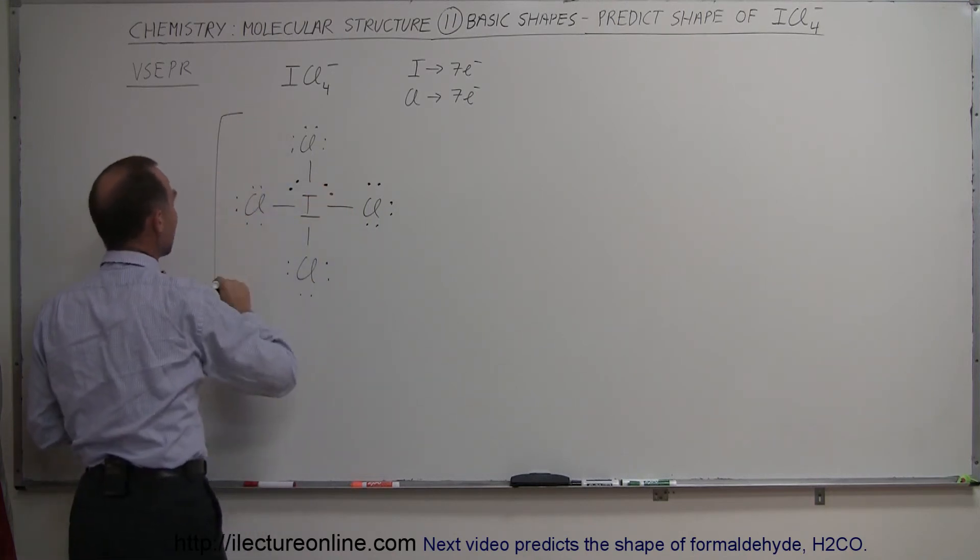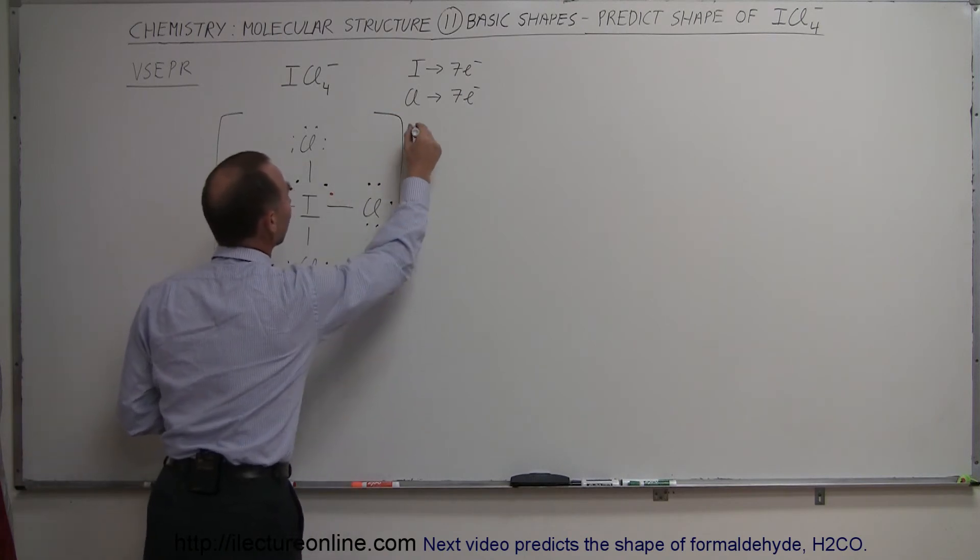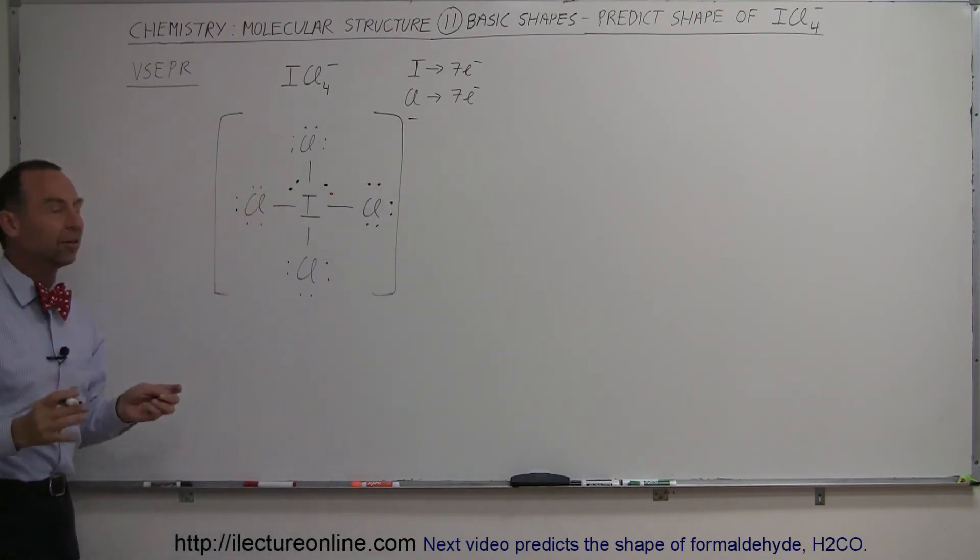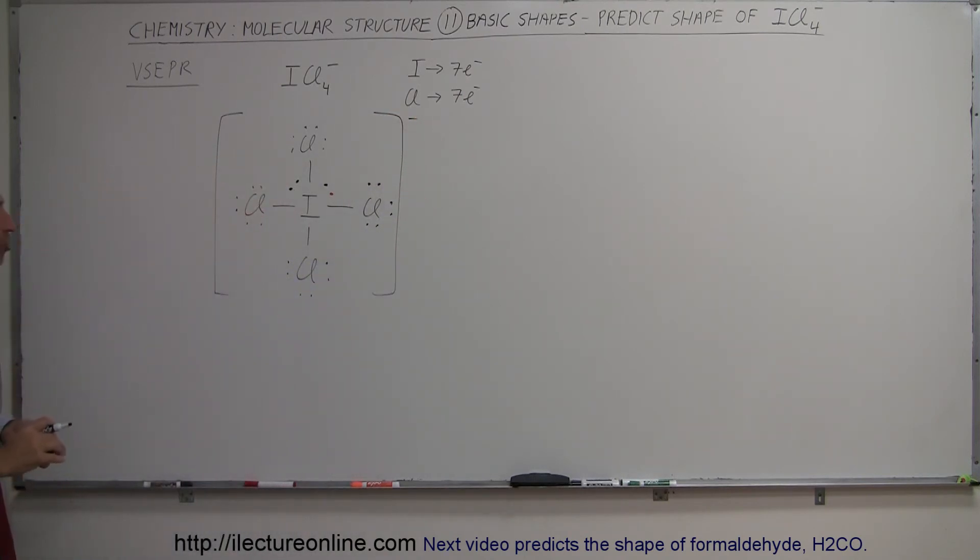The whole thing now is a minus one ion. We just put a minus there indicating there's a negatively charged ion. But now it has two free electron pairs.